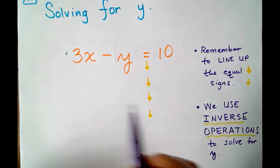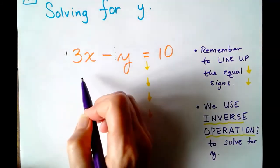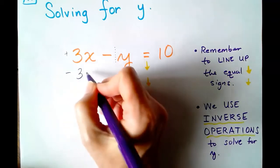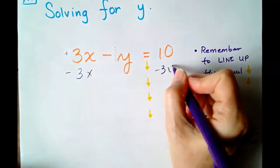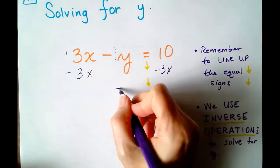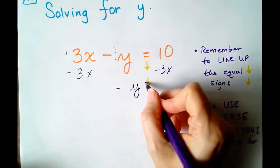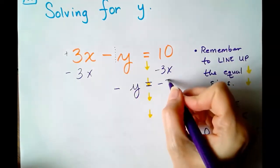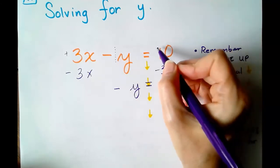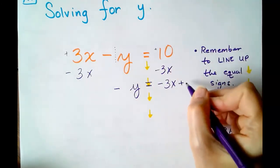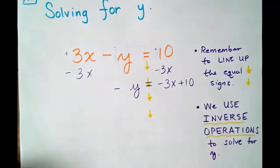The first thing we're going to do is we're going to get rid of this positive 3X. And we will do that by subtracting 3X from both sides. So we end up with negative Y equals negative 3X, and remember that 10 is positive, plus 10.